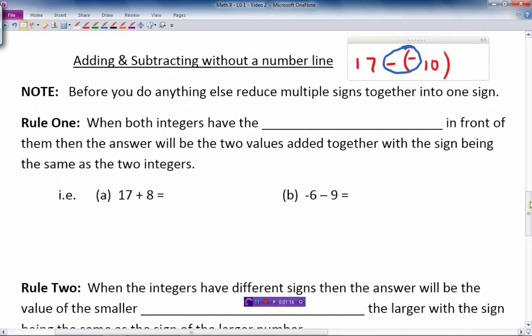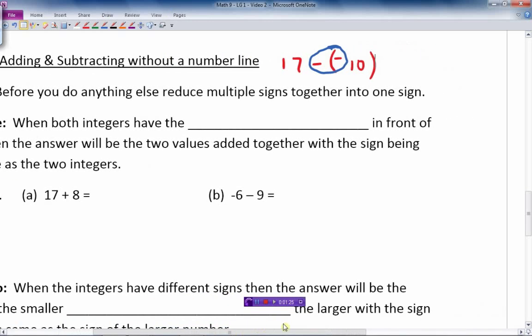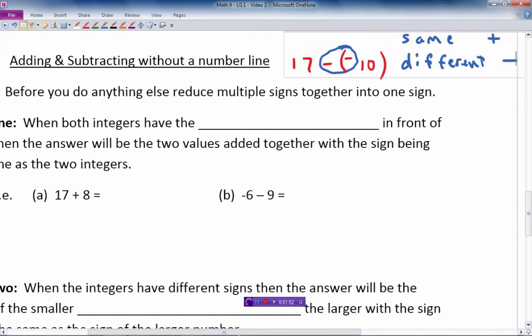And so if the signs are the same sign, we just make sure we put that little rule down here. So if it's the same sign, then what happens is they become one positive sign. If the two signs are different, it becomes one negative sign. Similar to rules of multiplication, but this is not multiplication.